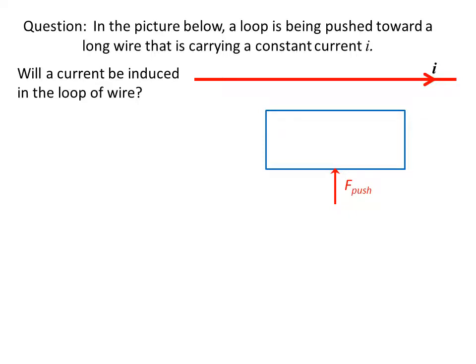In this problem, we look at the picture below. A loop is being pushed toward a long wire that is carrying a constant current I. Will a current be induced in the loop of wire?